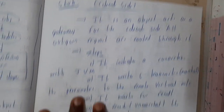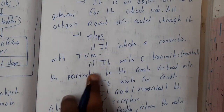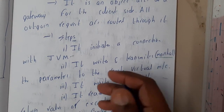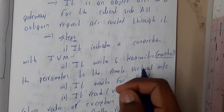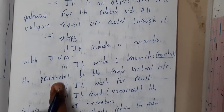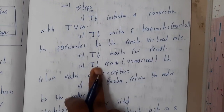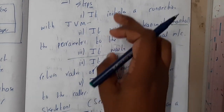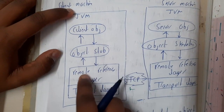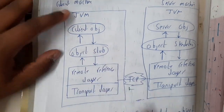The stub is responsible for initiating communication with the remote JVM. It writes and transmits — that is, marshals — the parameters to the remote virtual machine. Marshaling is essentially an encrypted or packed form of the data, similar to what we discussed in RPC where a function call is converted into a message. The stub then waits for the result, reads it, and unmarshals the value. So it takes the values, marshals them, sends them, waits for the response, unmarshals the response, and returns the result.